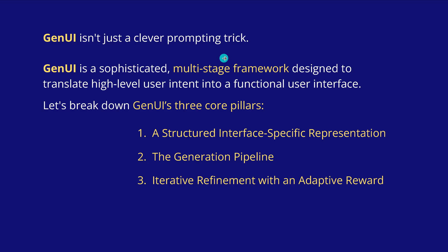A multi-stage framework with more or less three pillars, Stanford tells us. First, you have a structured interface-specific representation decided upon by the AI. Then you have the generation of this interface — a complete data generation pipeline, analysis pipeline, coding pipeline, and everything. And then you have a refinement: an AI-guided iterative refinement process to get the best interface.